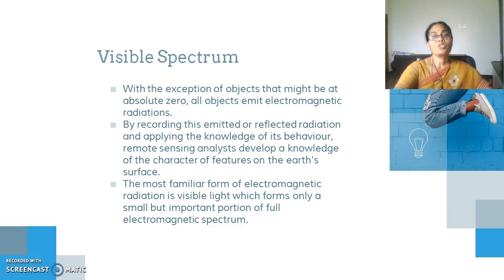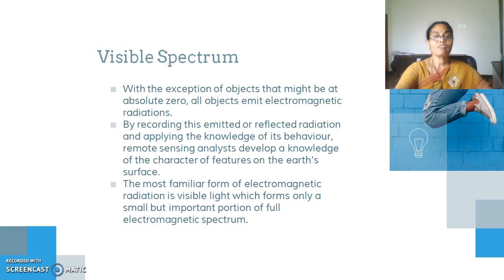With the exception of objects that might be at absolute zero, all objects emit electromagnetic radiations. By recording this emitted or reflected radiation and applying the knowledge of its behavior, remote sensing analysts develop a knowledge of the character or features on the earth's surface. The most familiar form of electromagnetic radiation is visible light, which forms only a small but important portion of the electromagnetic spectrum.